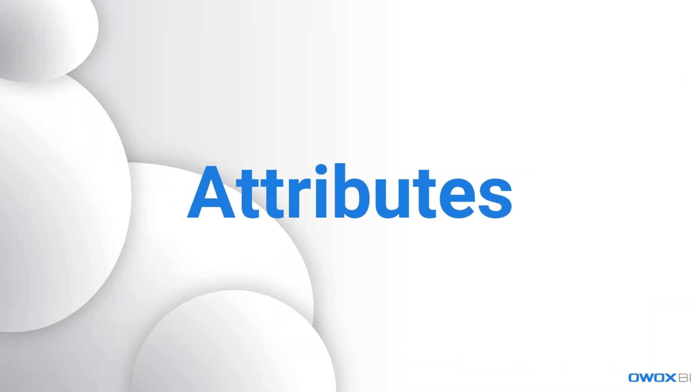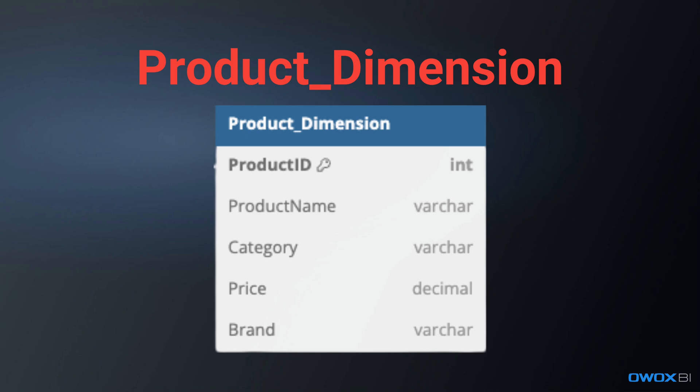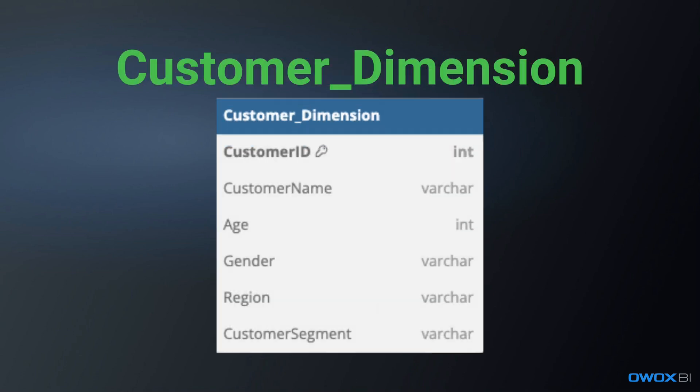Now, attributes. Attributes are the individual columns inside each dimension table. For example, in the product dimension it's product category, brand, and price. In the customer dimension, it's region, segment, and gender. These attributes help you group, filter, and segment your data. They are the secret sauce behind every meaningful chart or pivot table.